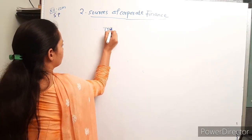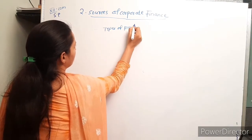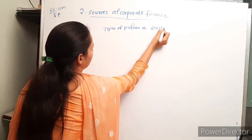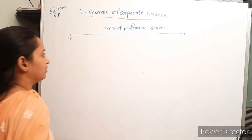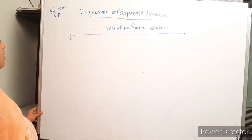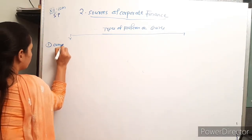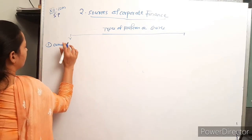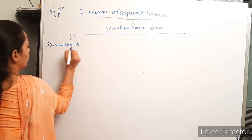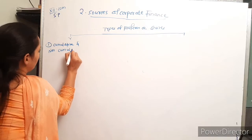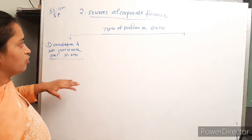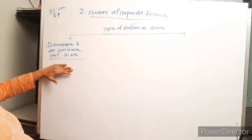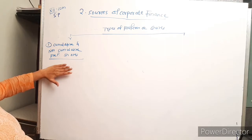Now let's look at the types of preference shares. The first type is cumulative and non-cumulative preference shares.